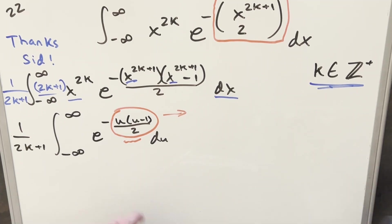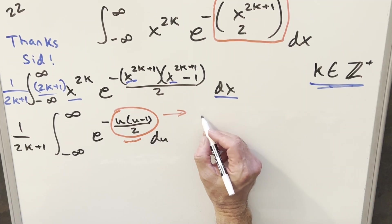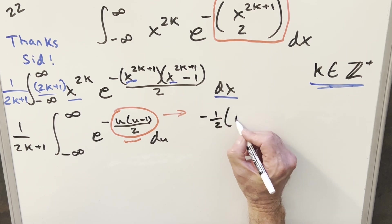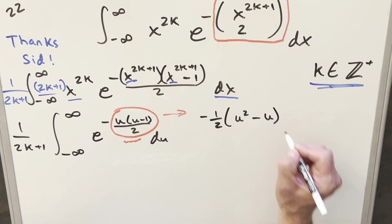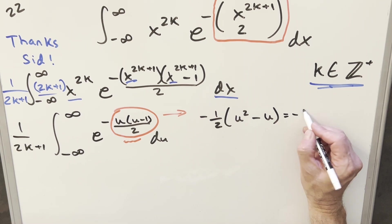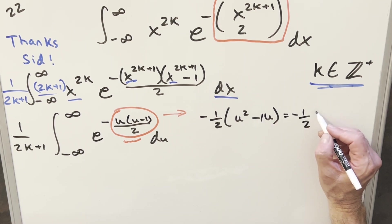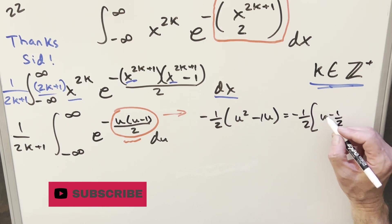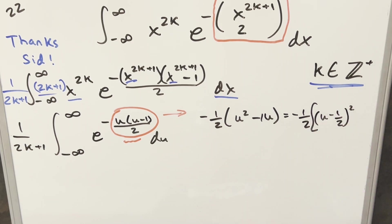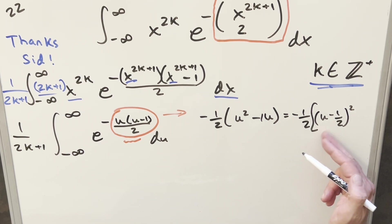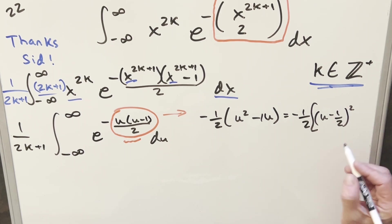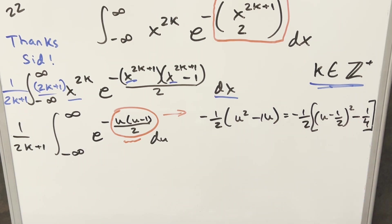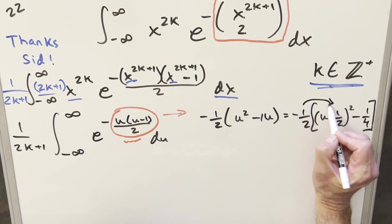Let's take this off to the side and see what we can do to manipulate it. I'm going to factor the 2 out in front, writing this as minus one-half times (u squared minus u). Then I can complete the square: that becomes (u minus one-half) squared, which distributes to u squared minus u plus one-fourth. Since I don't want to change it, I subtract one-fourth at the end.